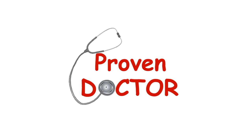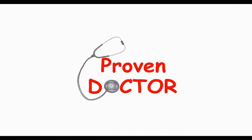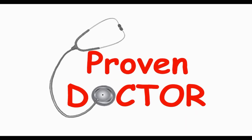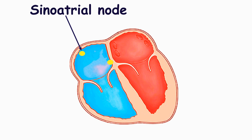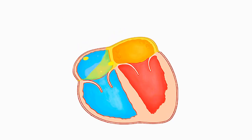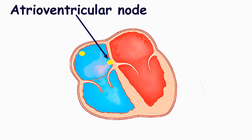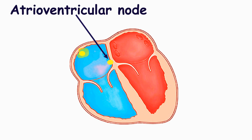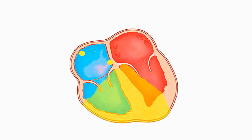Welcome to Proven Doctor. In this video we will speak about the atrioventricular blocks. Normally, the sinoatrial node is a natural pacemaker. Impulses originating from the sinoatrial node depolarize the atria and are conducted to the atrioventricular node, also called the AV node, which makes some physiological delay. Then the impulse is conducted to the ventricles.